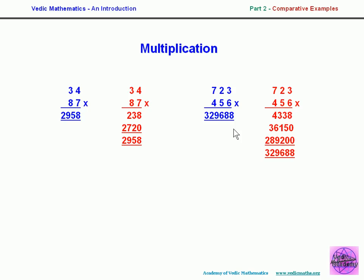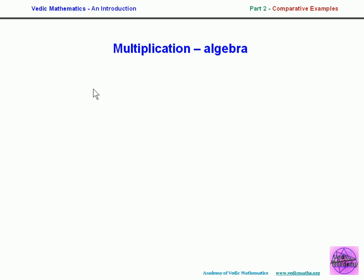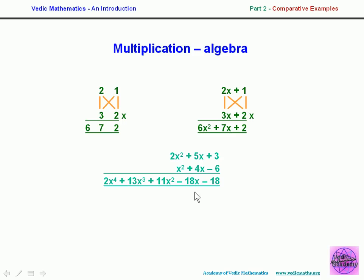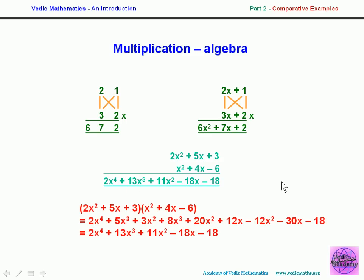The multiplication pattern is also reversible, so we can do division. Given 2958 and 87, for example, we can find the missing number. The same pattern used for multiplying numbers can also be used for multiplying algebraic expressions, so there's no separate method needed. In the Vedic method, you get the answer in one line from right to left or left to right, and the pattern automatically gathers up terms of the same type. The conventional method requires multiplying each of three terms by each of three terms — nine terms in total — then collecting like terms.